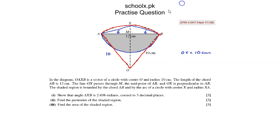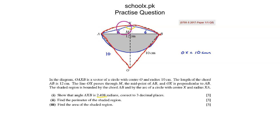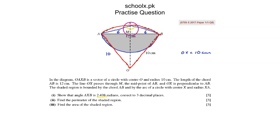We are asked to find angle AXB. If I take triangle AXM and find angle AXM, then multiply it by 2, I'll get angle AXB, because this is an isosceles triangle where AX equals XB, and the perpendicular bisector divides the angle into two equal halves.